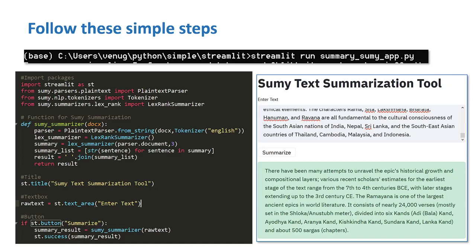Now that we have created the function which takes input from the user and displays the summary back, we are going to create a graphical user interface for it. First we will set the title using the dot title function — the title will be 'Sumy Text Summarization Tool'. This is the main message the user is greeted with when they open the website. After that we provide a text box using the text_area function with the header 'Enter Text' so the user knows what to do.